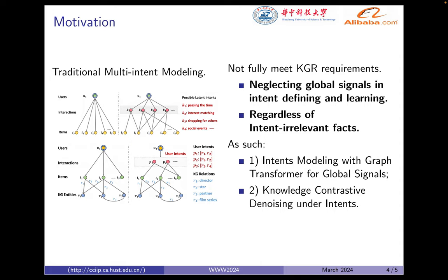We investigated intent modeling approaches, which usually distinguish user interactions by considering different item combinations or relation combinations as different intents. However, they are not suitable for KG recommendation, because all signals may contribute to the intent modeling — for example, entities or relations in the KG, or relations in user-item interactions. Furthermore, they neglect to reduce intent-irrelevant signals.